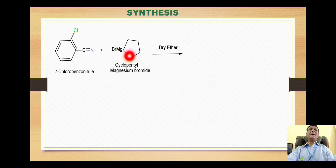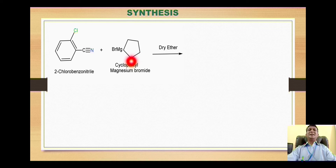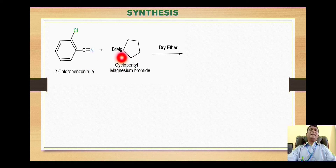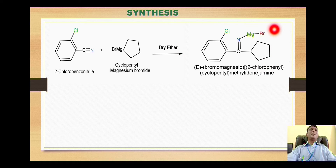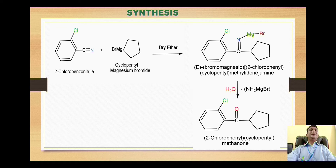When the cyclopentyl group is attached with magnesium, it acquires a negative charge because magnesium is electropositive and donates one of its electrons to the cyclopentyl group, making it a carbanion. This nucleophile then attacks the electrophilic carbon of the nitrile group, giving a nucleophilic addition product. The MgBr then goes onto the nitrogen, breaking the single bond and giving the addition product where cyclopentyl is added to the carbon and BrMg is on the nitrogen, forming the bromomagnesio methylideneamine group.